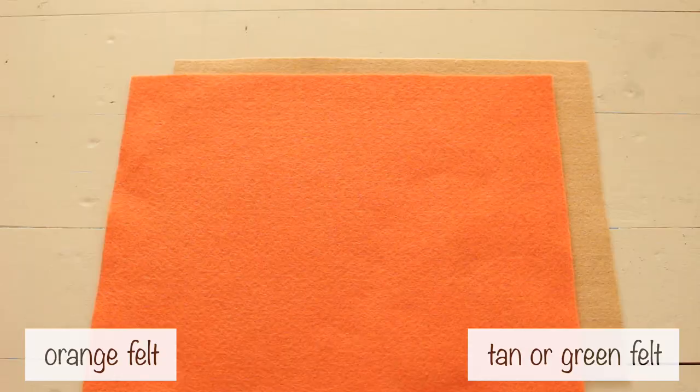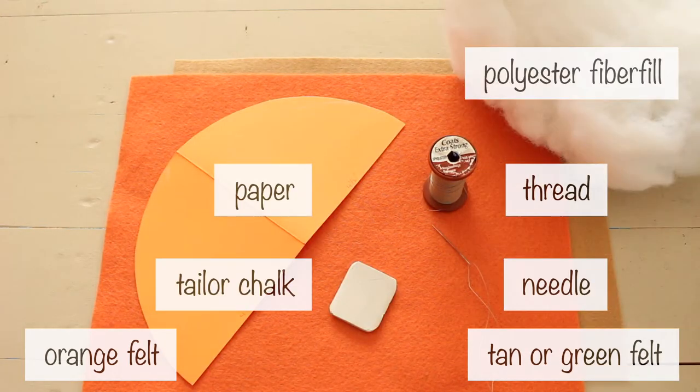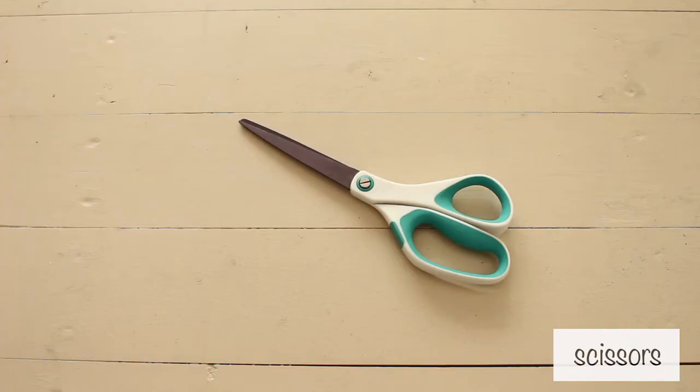For the mini felt pumpkin, you'll need tan felt, orange felt, paper, tailor chalk, thread, needle, poly fiberfill, glue gun, scissors, and a compass.